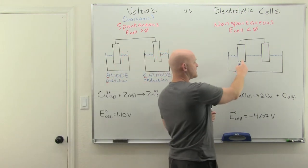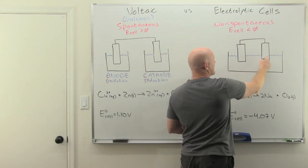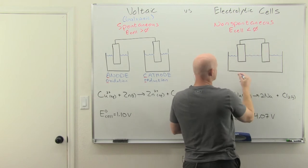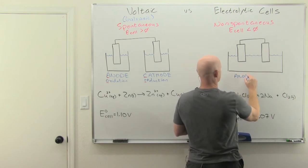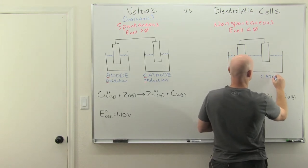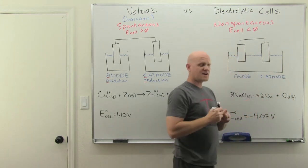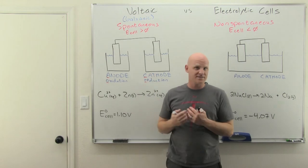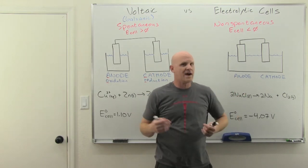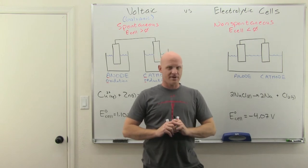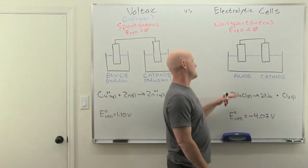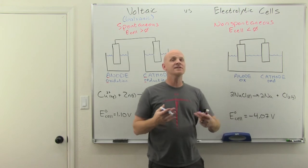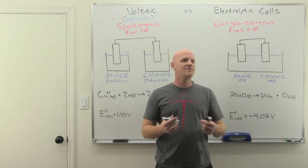For the electrolytic cell, we still have two electrodes connected by a wire, and those electrodes are often metals or at least electrically conductive materials. The anode is once again on the left and the cathode on the right — it is customary to always put the anode on the left and the cathode on the right by convention. The anode is still the site of oxidation and the cathode is still the site of reduction. That is the definition of anode and cathode.